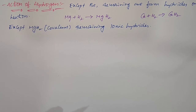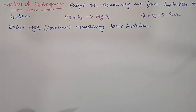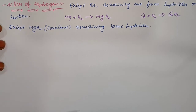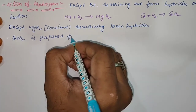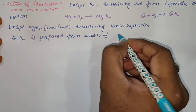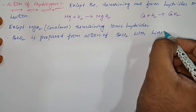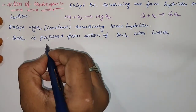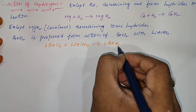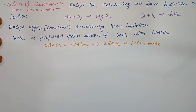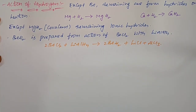Magnesium hydride is the covalent hydride. Now, beryllium hydride is not directly formed by reaction with hydrogen. It is prepared by the action of lithium aluminum hydride (LiAlH4) with beryllium chloride. The corresponding equation is: 2BeCl2 + LiAlH4 → 2BeH2 + LiCl + AlCl3.